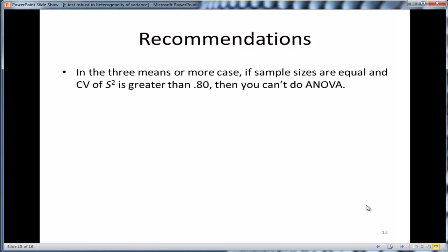If you have three means or more and your coefficient of variation across your variances is 0.80 or greater, then you can't use the ANOVA. My hunch is that you will not find many cases like that. So, if it's less than 0.80, I would say somewhere like 0.6, certainly 0.5, 0.4, you're okay with the ANOVA.